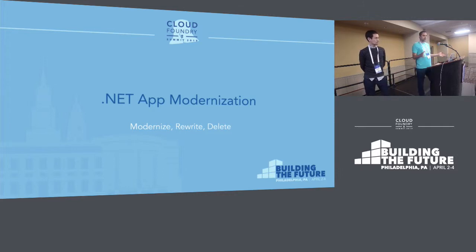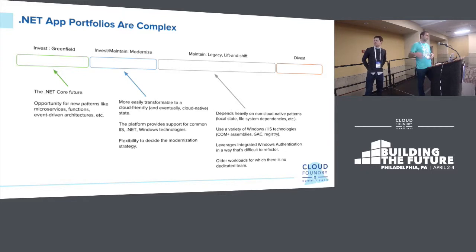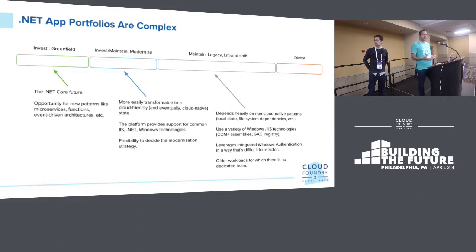My goal is to show you that a lot of .NET applications can run on Cloud Foundry pretty easily. You have to step back and look at your portfolio. It's a continuum — from modern .NET Core applications that can run on Linux, to the other extreme where you want to divest. There's a middle area where applications with some modernization would be good targets: things you're actively developing that continue to provide business value, good targets for Cloud Foundry on Windows.